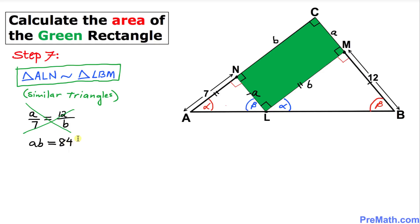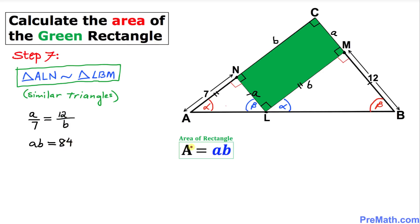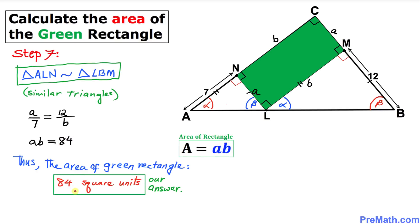Finally, let's recall the area of a rectangle formula: area equals A times B. That means the area is 84 square units. So the area of this green rectangle turns out to be 84 square units — and that is our final answer. Thanks for watching, and please don't forget to subscribe to my channel for more exciting videos. Bye!